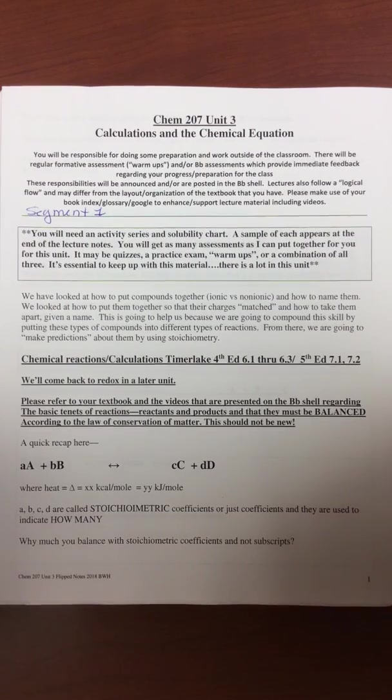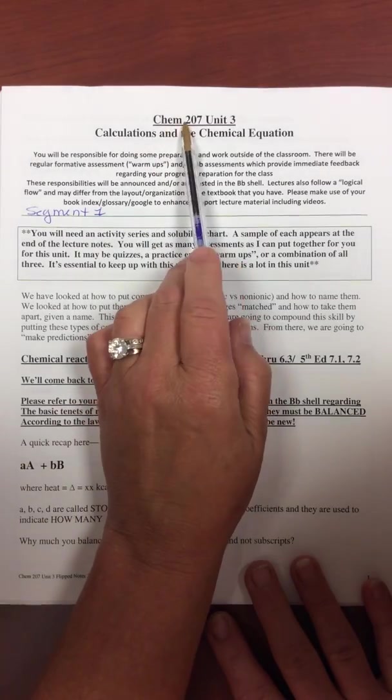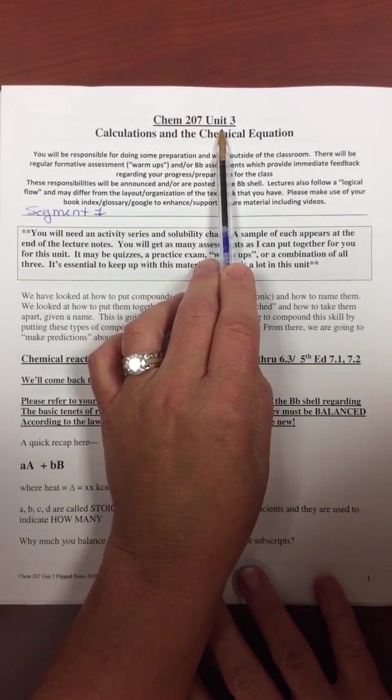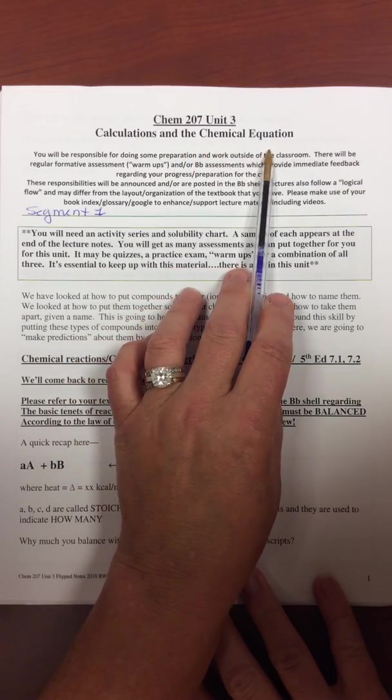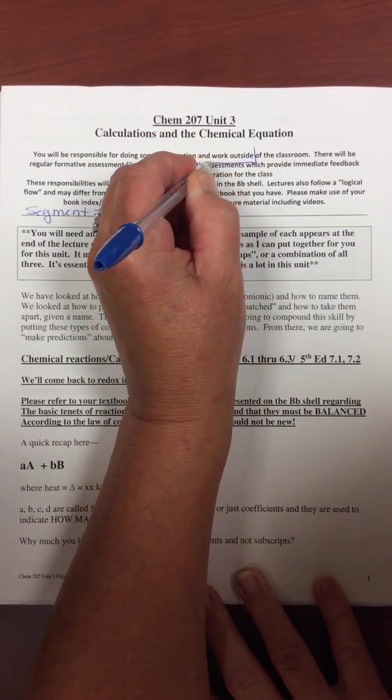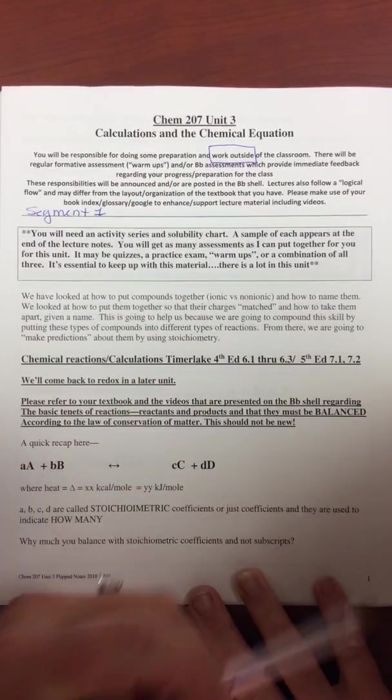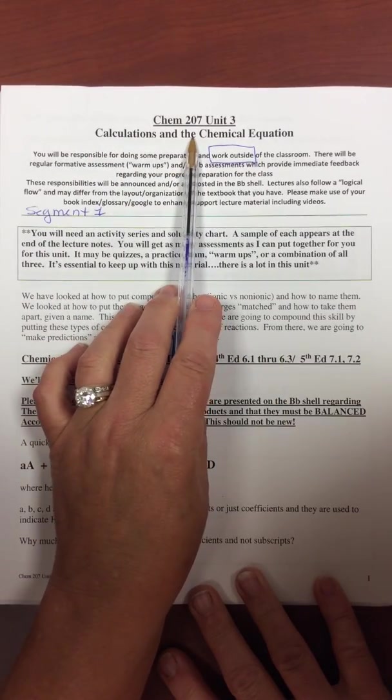Hello, this is Brenda Wingard Haynes, and this is Chem 207, Unit 3. Unit 3 is Calculations and the Chemical Equation. This is where the class will, the intention is for this unit to be flipped in its entirety.